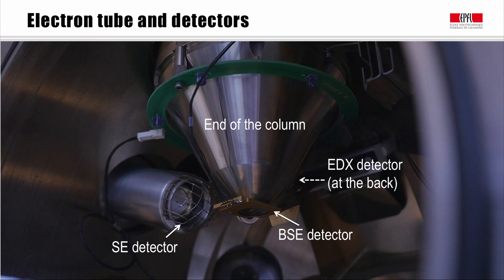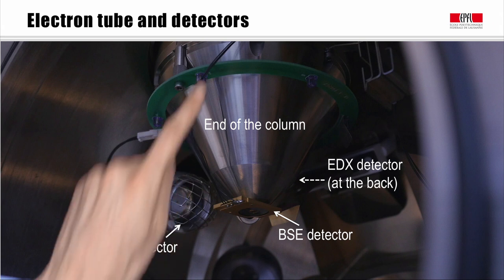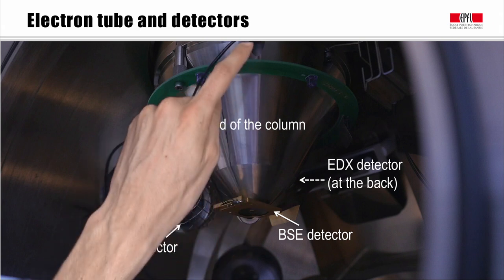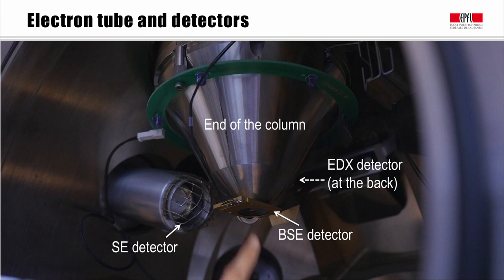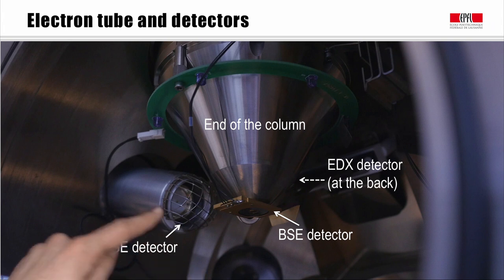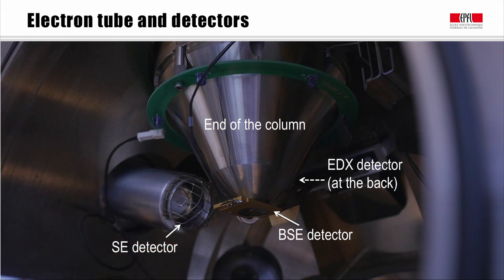This image shows how the chamber of the microscope looks. You have the end of the column here — the incident beam comes through this hole to the chamber, with the sample holder right below. Electrons are sent to the sample, and all these interactions are collected by different detectors: the secondary electron detector with the grid on top, the golden plate which is the BSE detector, and the EDX detector at the back. All this information can be collected in one microscope.